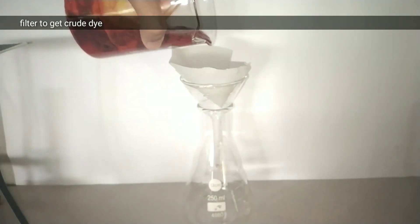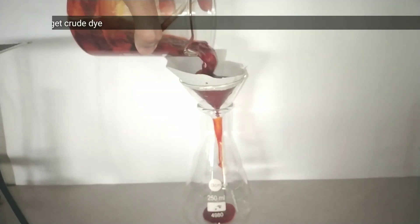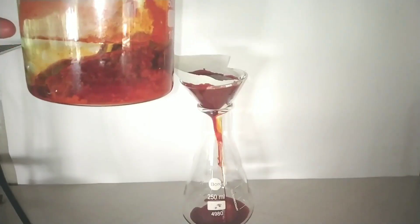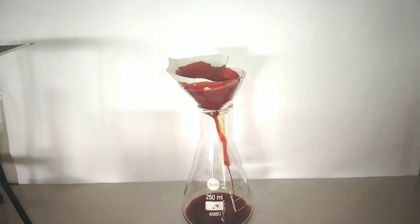Now to start the purification process, I will first do a filtration to get the crude dye. I am using a simple gravity filtration here. If you want to complete your filtration process faster, always do a vacuum filtration.